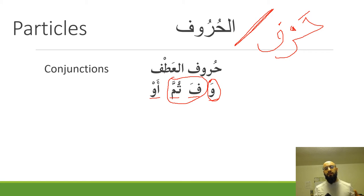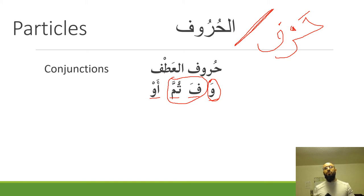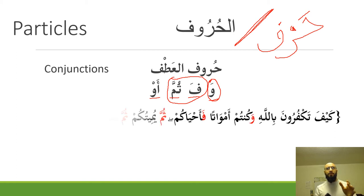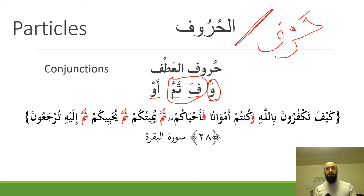Fa and thumma are more often used to definitively provide order and chronological sequence. Whenever you see fa or thumma, the speaker or writer wants to convey that a specific order is happening. The difference between them mirrors seen and sofa: fa means 'immediately after,' while thumma means 'eventually after.'